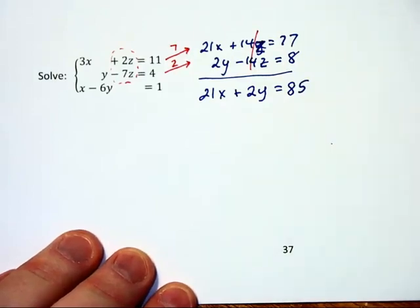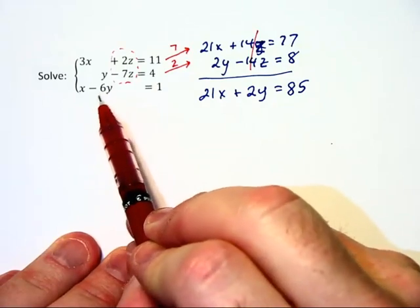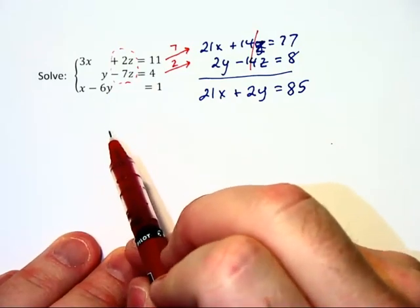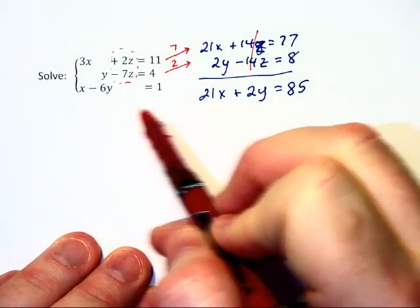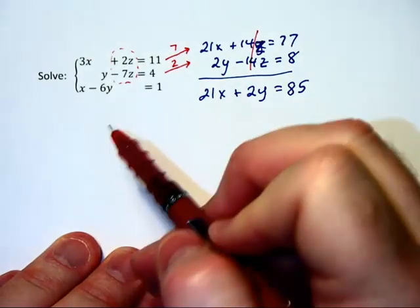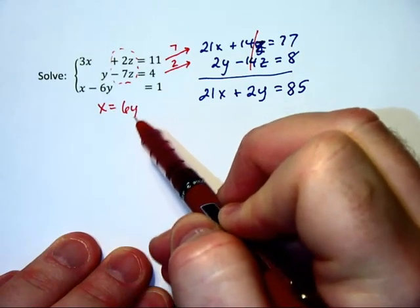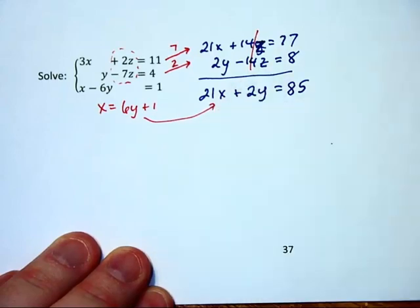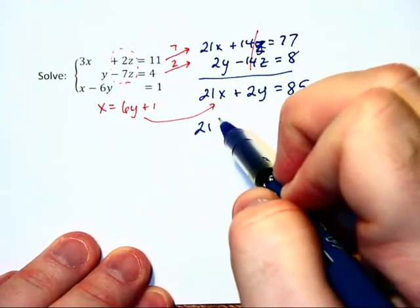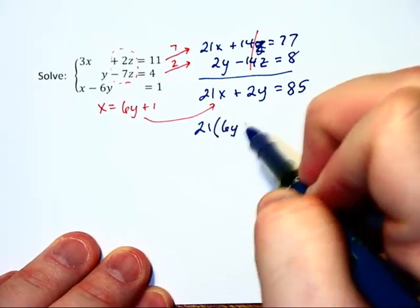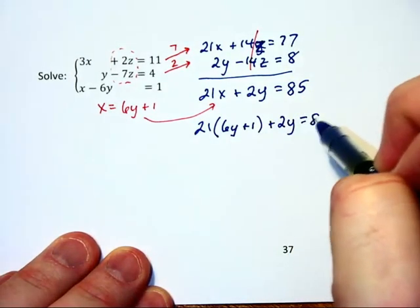Now, I have not used this bottom equation that has x and y in it, and I'm going to choose to multiply it by, well, I don't really want to multiply it by 21. Let's instead write that as x is equal to 6y plus 1, and use substitution here. We now would have 21 times 6y plus 1 plus 2y is equal to 85.